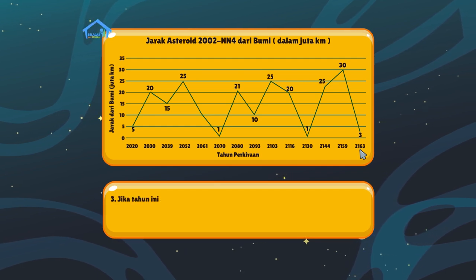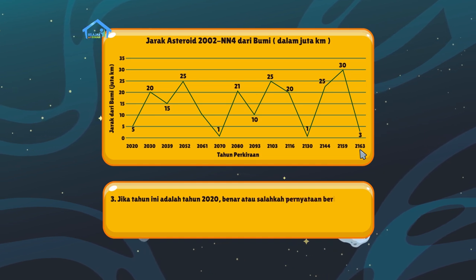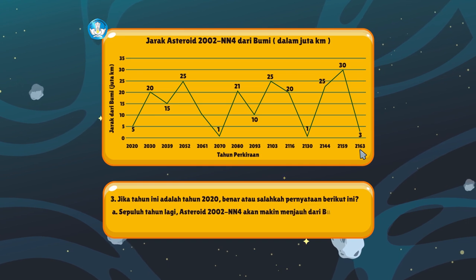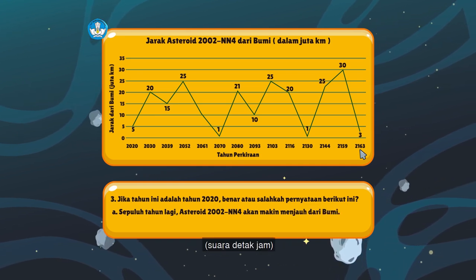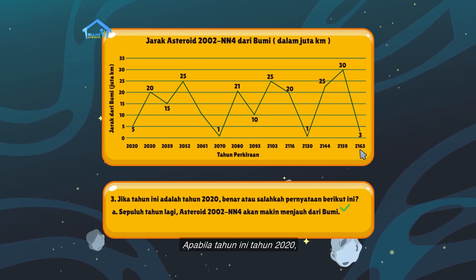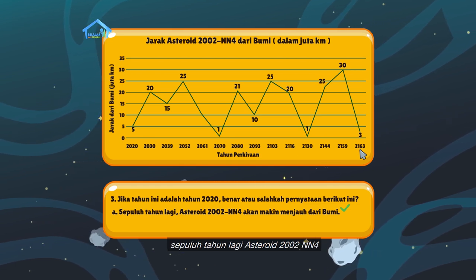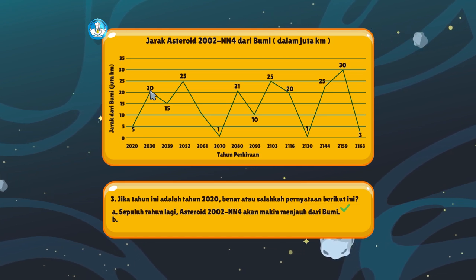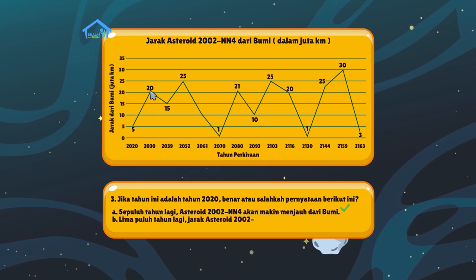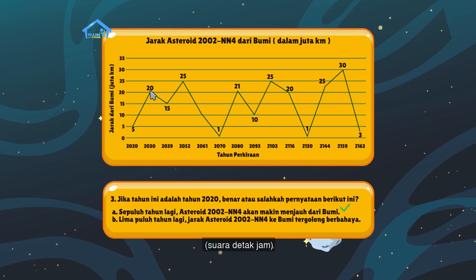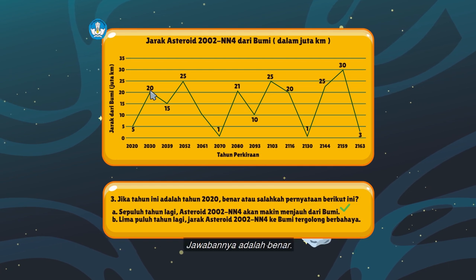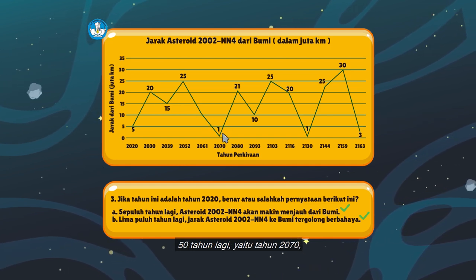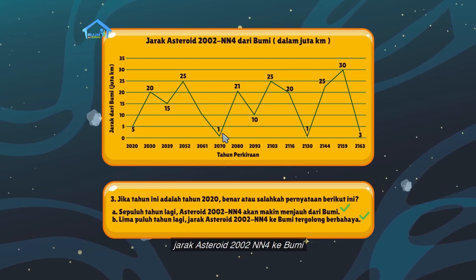Pertanyaan ketiga: jika tahun ini adalah tahun 2020, benar atau salahkah pernyataan berikut? A. 10 tahun lagi, asteroid 2002 NN4 akan makin menjauh dari bumi. Jawabannya adalah benar. Kemudian, benar atau salahkah jika dinyatakan 50 tahun lagi jarak asteroid 2002 NN4 ke bumi tergolong berbahaya?